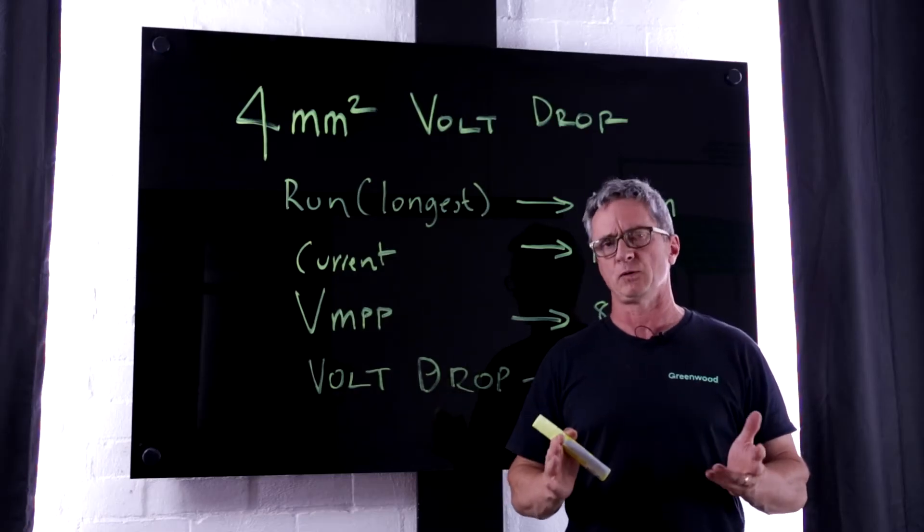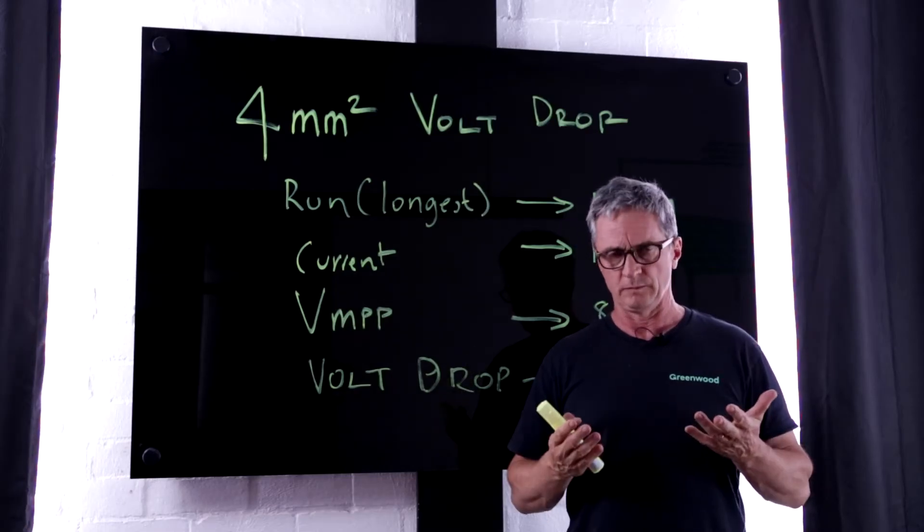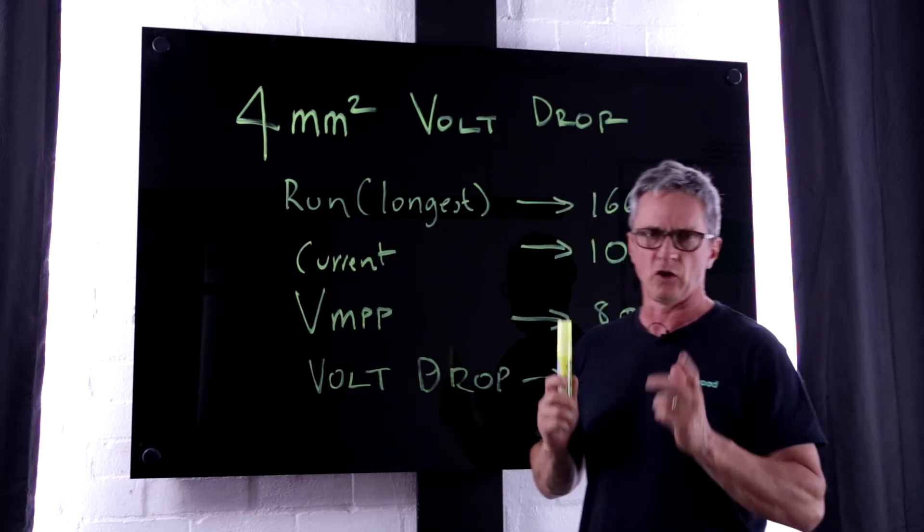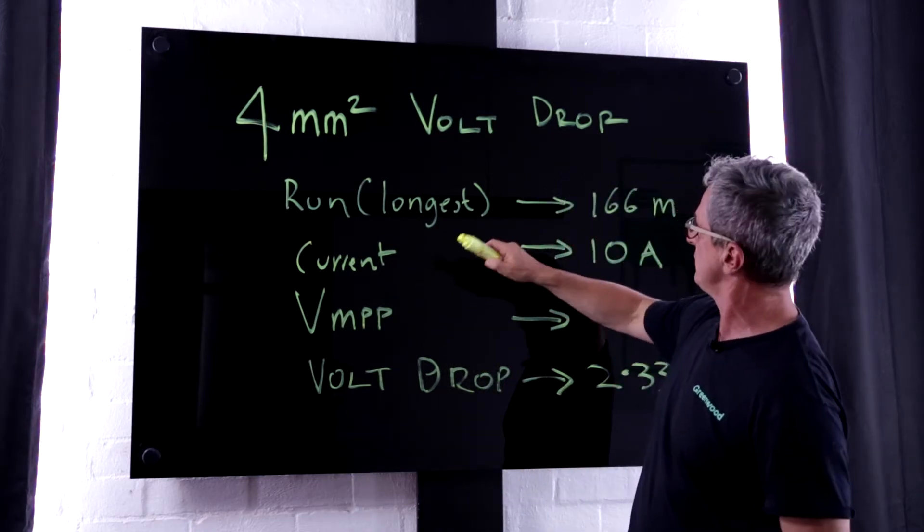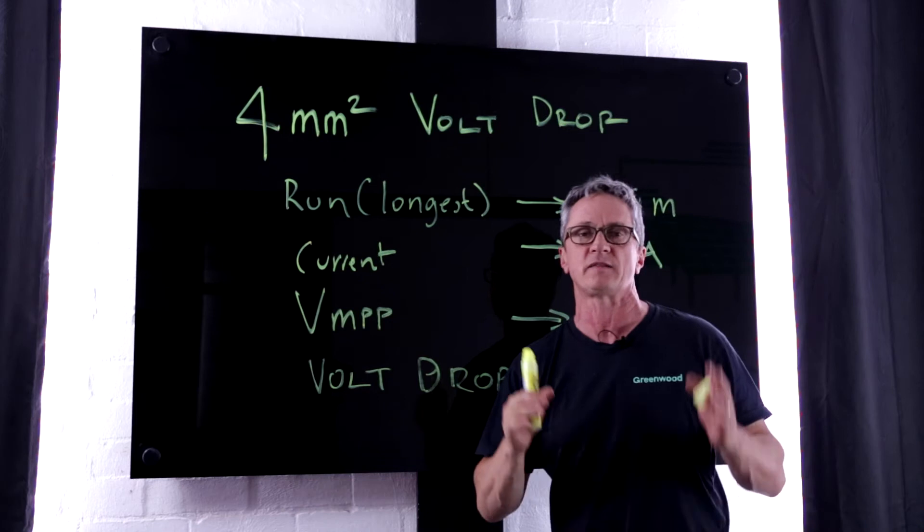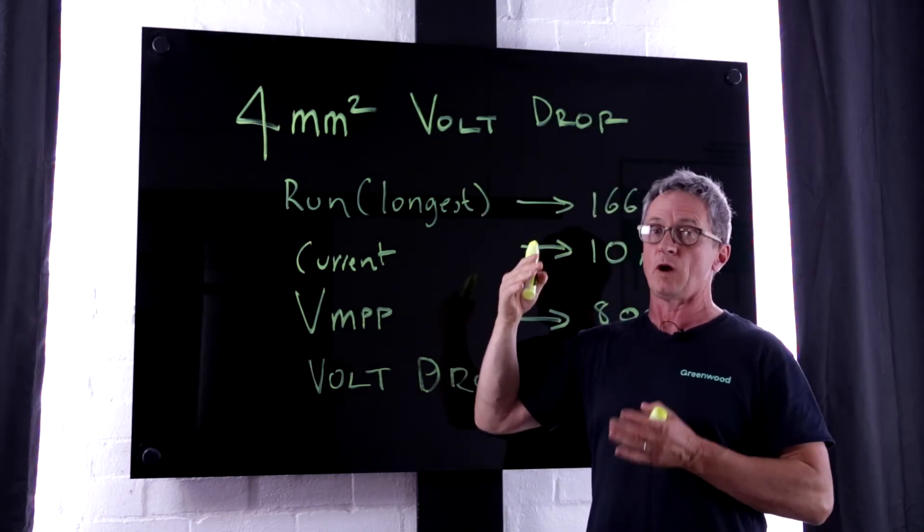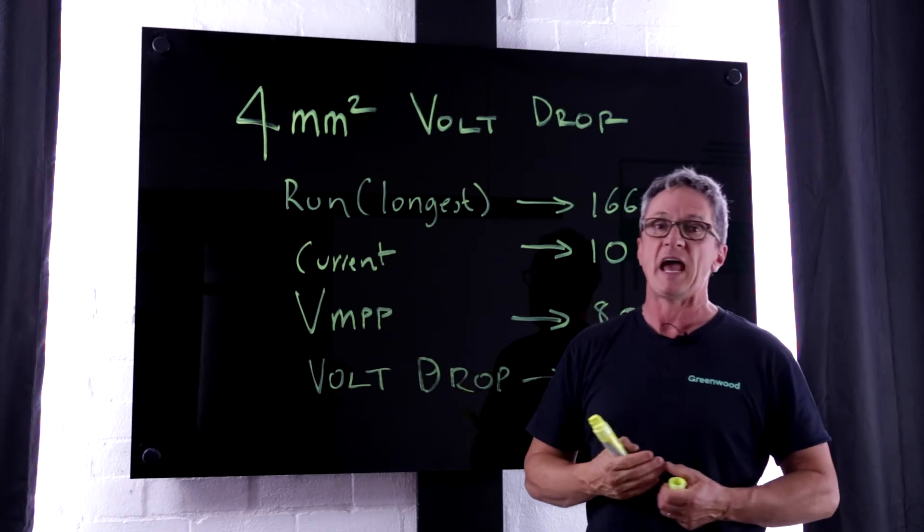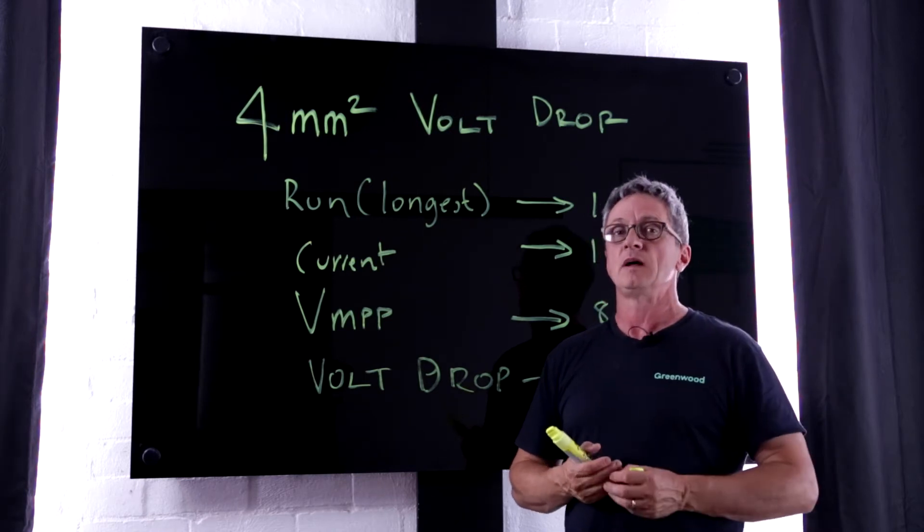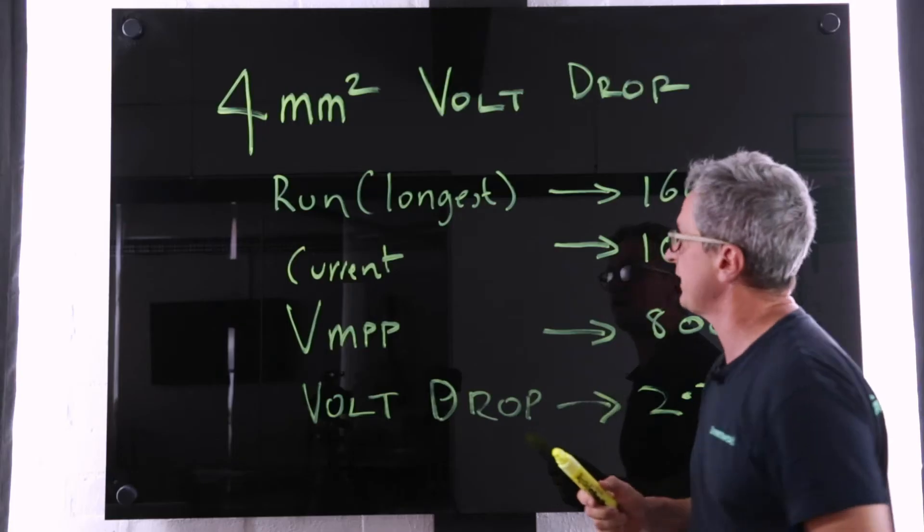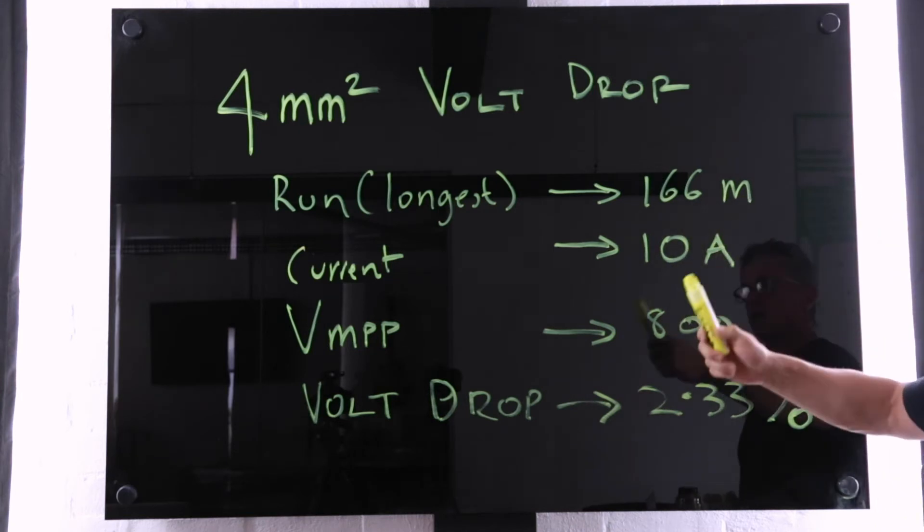We're talking 4mm cable, single, non-paralleled runs. Now the longest run obviously is 166 meters and that's made up by the 133 meter run between row number 1 and row number 20 and then add on another 30 odd meters. So that's the calculation we're doing on our volt drop calculation.